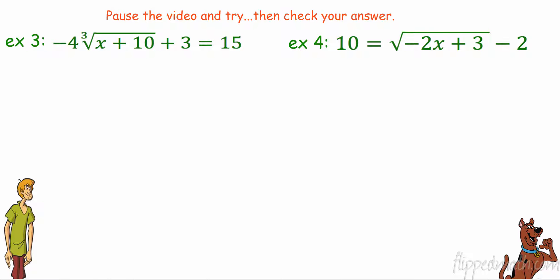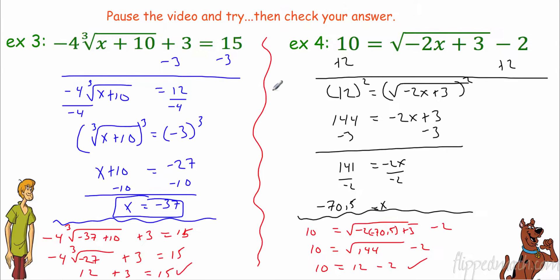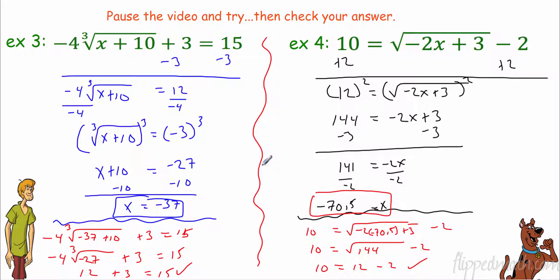Pause the video, try these, and check them on your own. On this one: subtract 3, then divide by negative 4 to get x plus 10 equal to negative 27, and x equals negative 37. It checked out. On the other side: add 2, then square both sides, then subtract 3. Decimals check out too — you end up with 144 under the radical, and the square root of 12 minus 2 is, in fact, 10. So we can clear Mr. Kelly in the case of the shady answers.